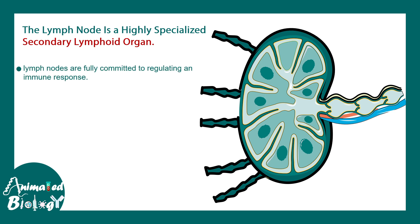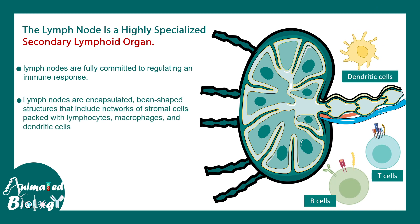Lymph nodes are fully committed in regulation of the immune responses. Lymph nodes are encapsulated, bean-shaped structures which are populated by dendritic cells, T cells, and B cells.